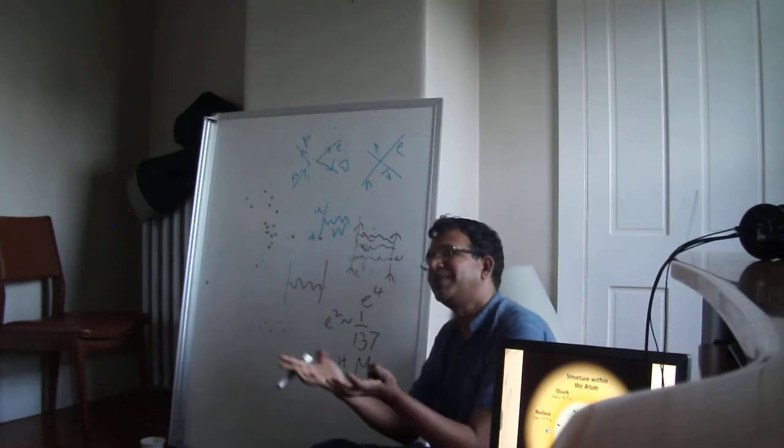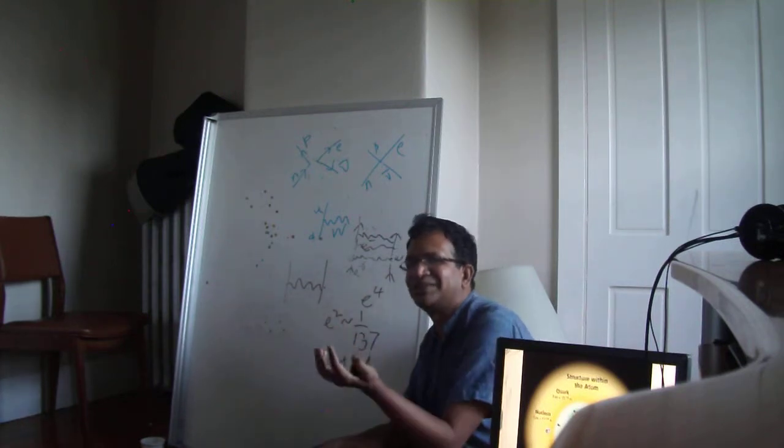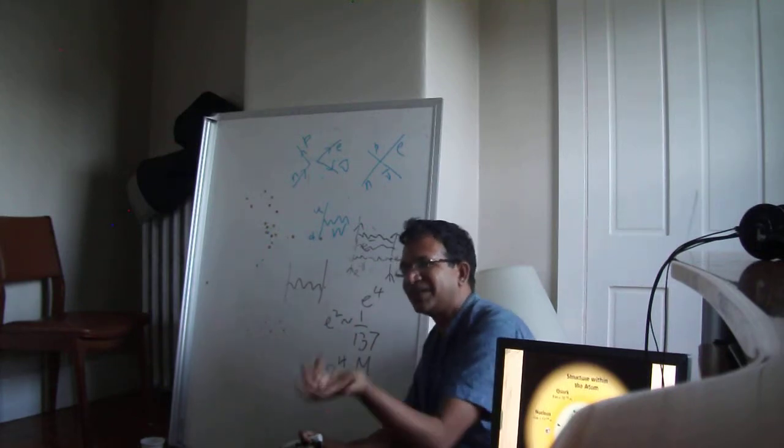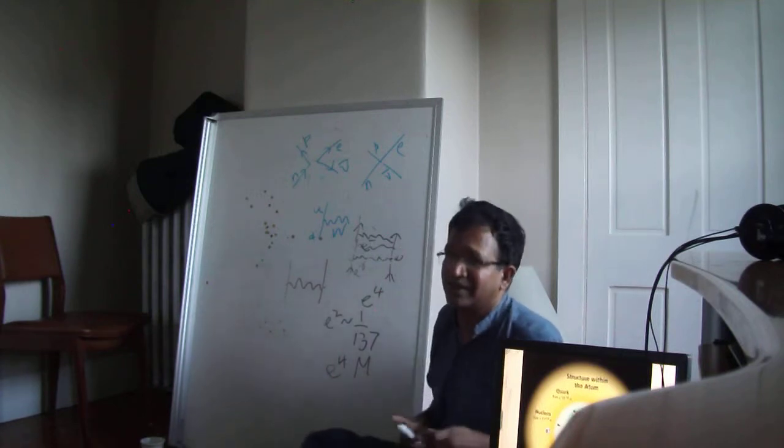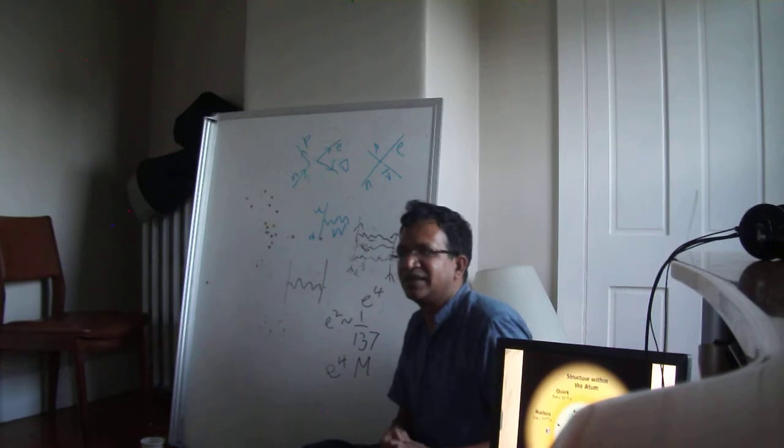Theories with more symmetry are renormalizable, and with less symmetry are not renormalizable. So quantum electrodynamics has a symmetry. Now what symmetry does it have? And this is also something that you can easily see.